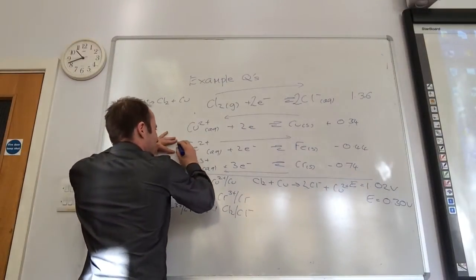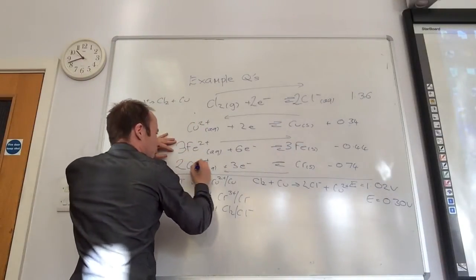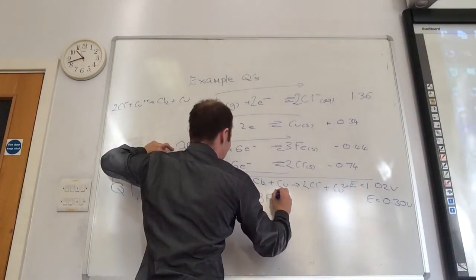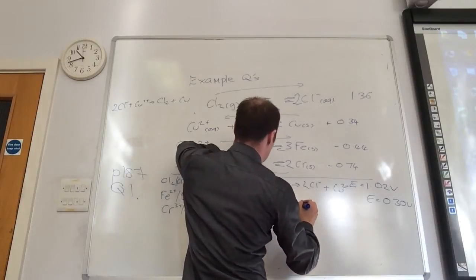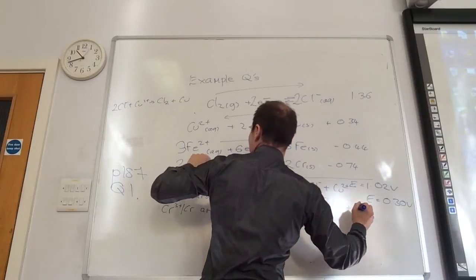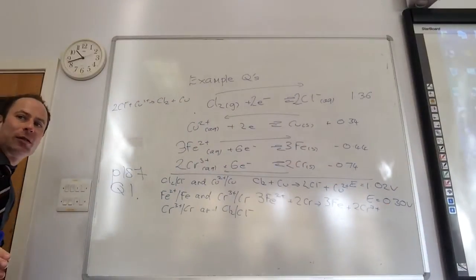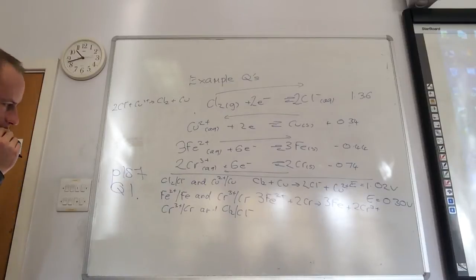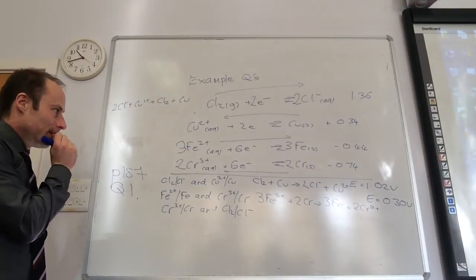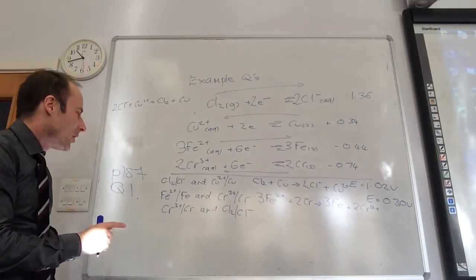This one I'm going to times by 3. So that becomes 6, that becomes 3. This one by 2. The reaction that will take place will be 3 Fe2 plus plus 2 chromium goes to 3 Fe plus 2 chromium 3 plus. Does the arrow show which one's reversed? Yeah, that one's showing me that this one's reversed. Shall we do the last one?